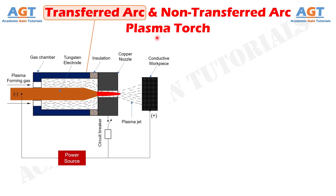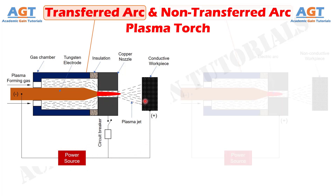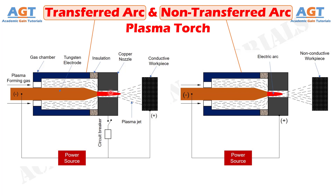In a transferred arc plasma torch, the workpiece is made an integral part of the electrical circuit. Therefore, the positive terminal of the DC power source is connected to the workpiece, while the electrode remains connected with the negative terminal. The transferred arc plasma torch is also known as direct arc plasma torch, as electrical connection is made directly between the electrode and workpiece.